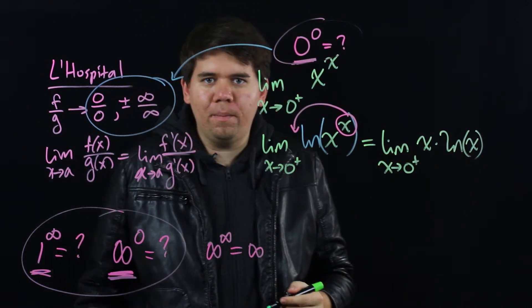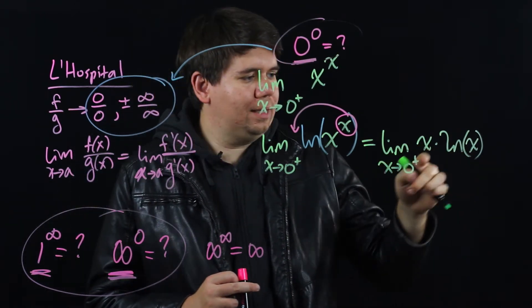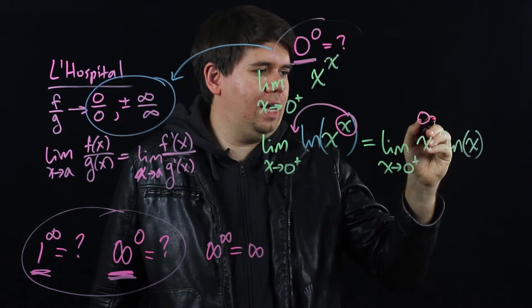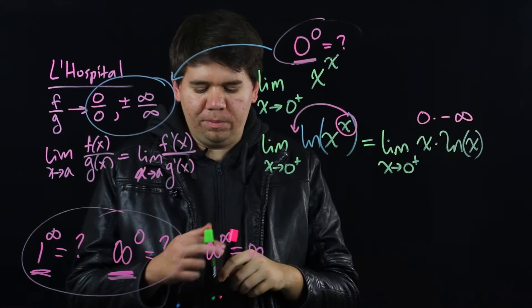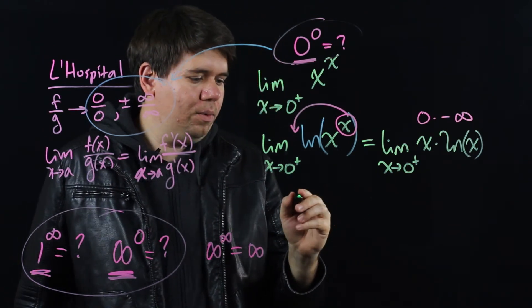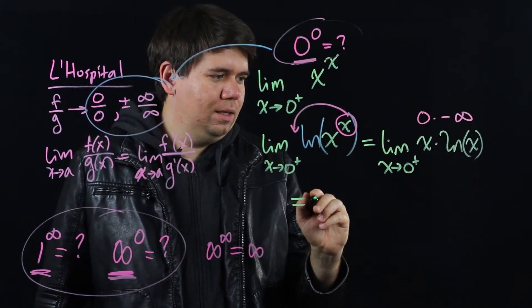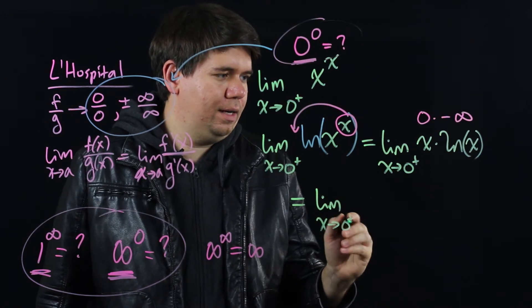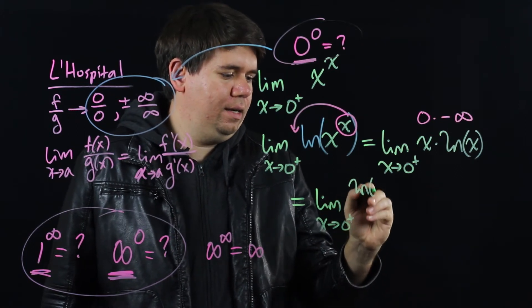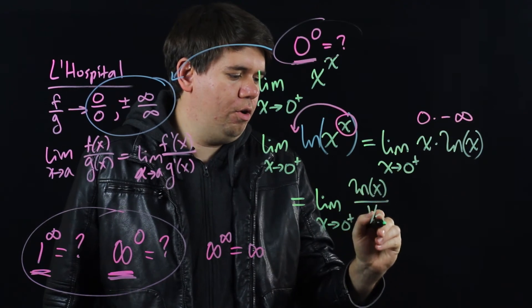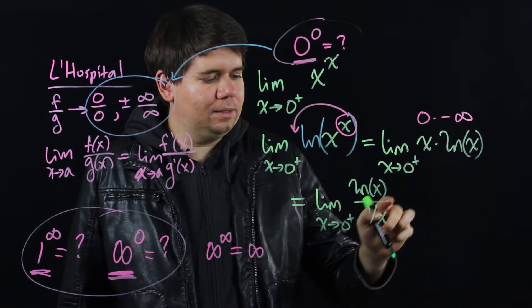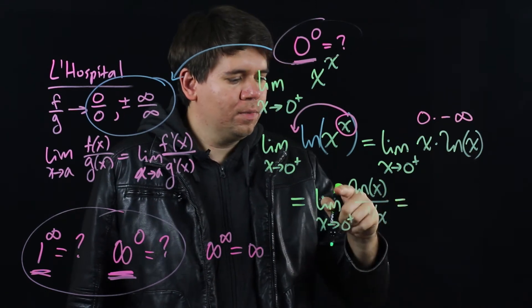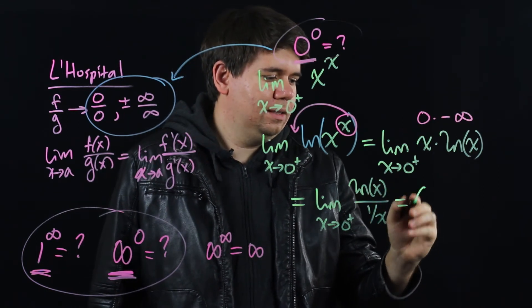But this looks quite familiar right? When you had x times the natural log of x you said that's just going to 0 times minus infinity. That was another indeterminate form that we're able to deal with by writing it as just the limit as x goes to 0 from the right hand side of ln of x over 1 over x. Multiplying by x is dividing by the reciprocal. And then we solve using L'Hopital's rule that this just comes out to be 0.